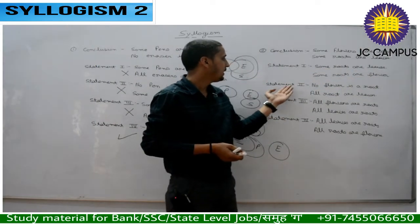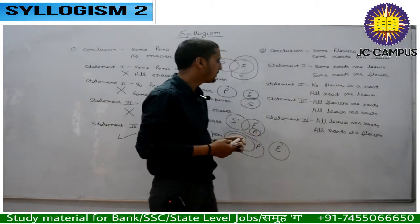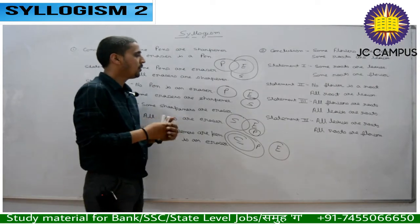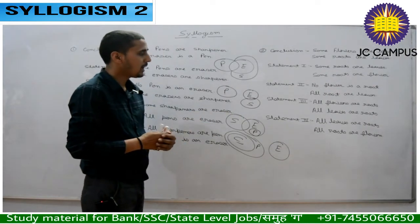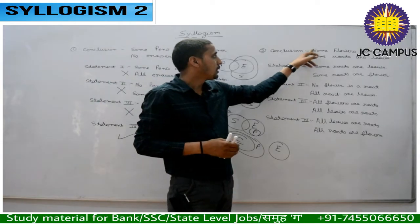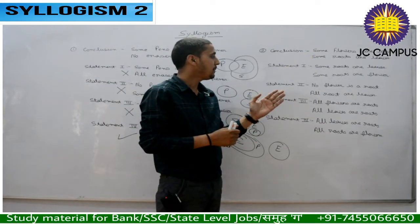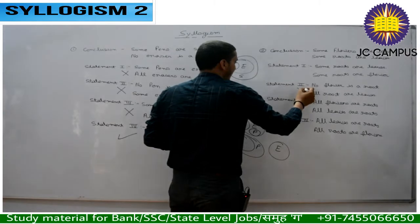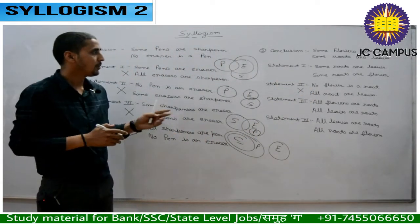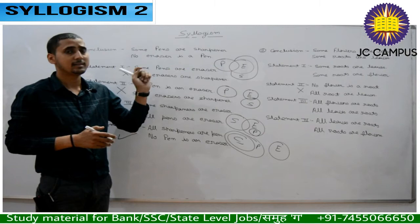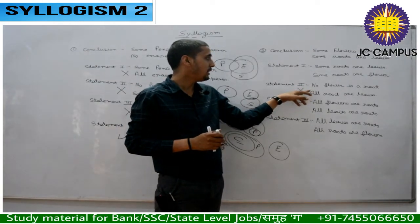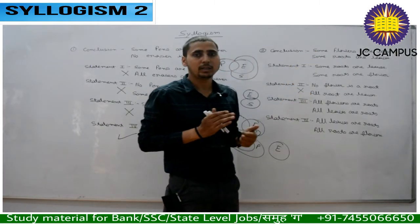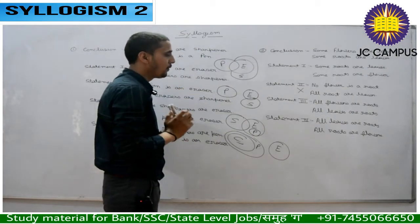Statement 2: No flower is a root, all roots are leaves. Statement 3: All flowers are roots, all leaves are roots. Statement 4: All leaves are roots and all roots are flowers. Now, 'no flower is a root' is a negative statement, while the conclusions given are both positive. That means this answer is not possible. So check only statements 1, 3, and 4 using the Venn diagram.